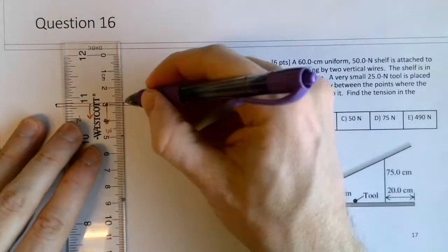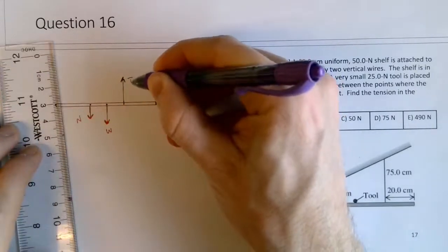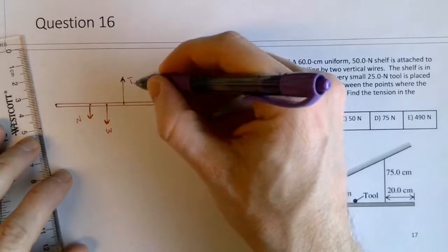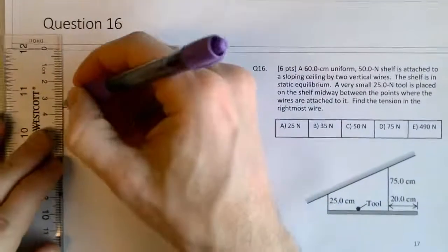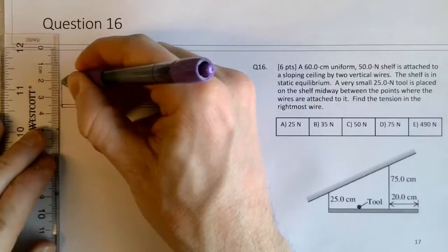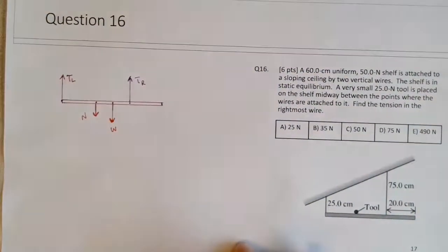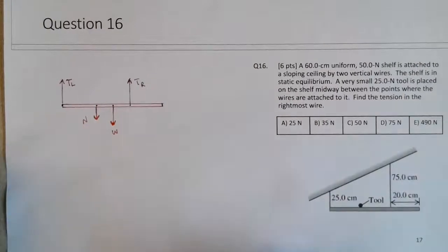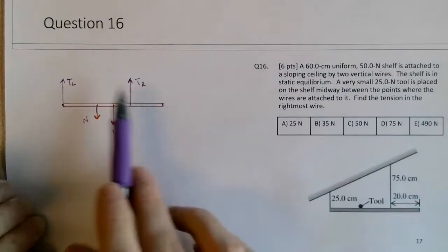And then we have an upward tension force, tension force for the right wire. And then over here there is a tension force for the left wire. But we don't know the size of those tensions. We do know the size of the normal, we do know the size of the weight.